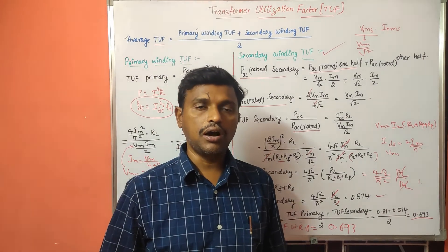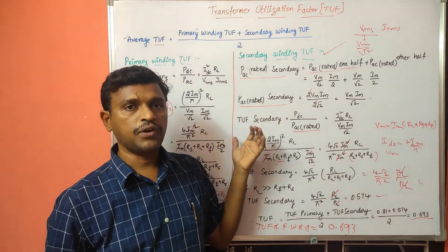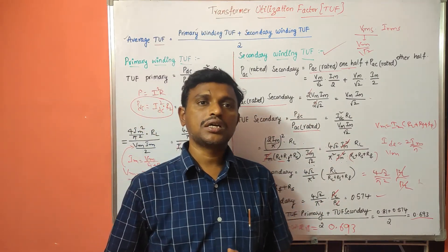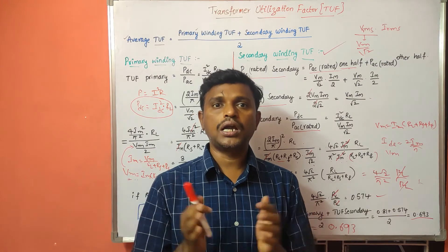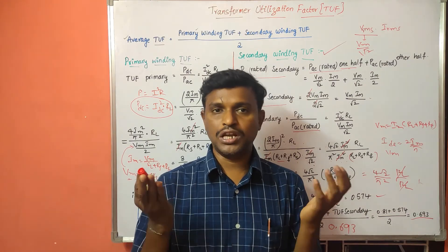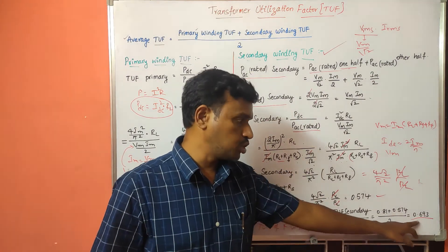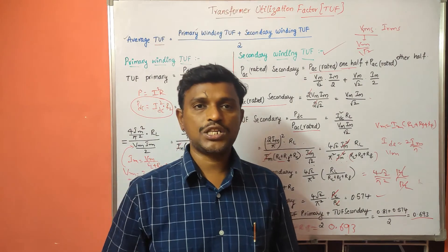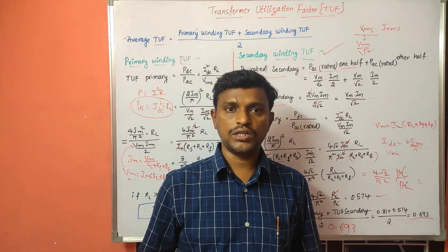This is the calculation of the full wave rectifier transformer utilization factor. In conclusion, first we calculated the primary winding transformer utilization factor, then the secondary winding TUF. Taking the average of those two gives the total transformer utilization factor for the full wave rectifier, which equals 0.693. Thank you for watching — please subscribe to our channel.